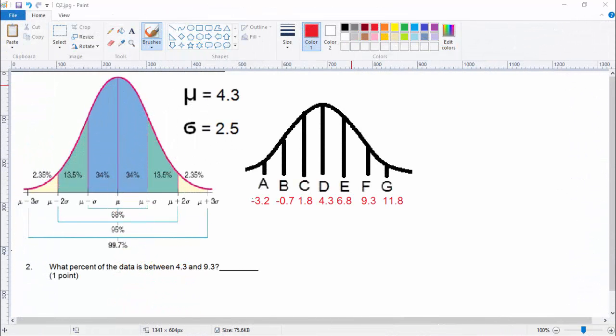Okay, so now that we filled that in we can fill in the rest of the answers. So I put question two here. What percent of the data is between 4.3 and 9.3? Well, let's see here, here's 4.3. And here's 9.3.